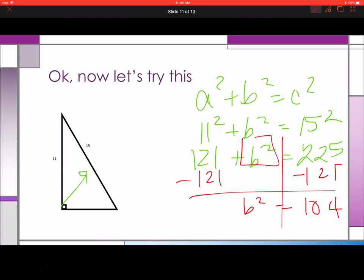Now I've got to figure out if there's any perfect squares. So does 4 go into 104? It does. Square root of 104 is equal to square root of 4 times 26, which means it is 2 times the square root of 26.